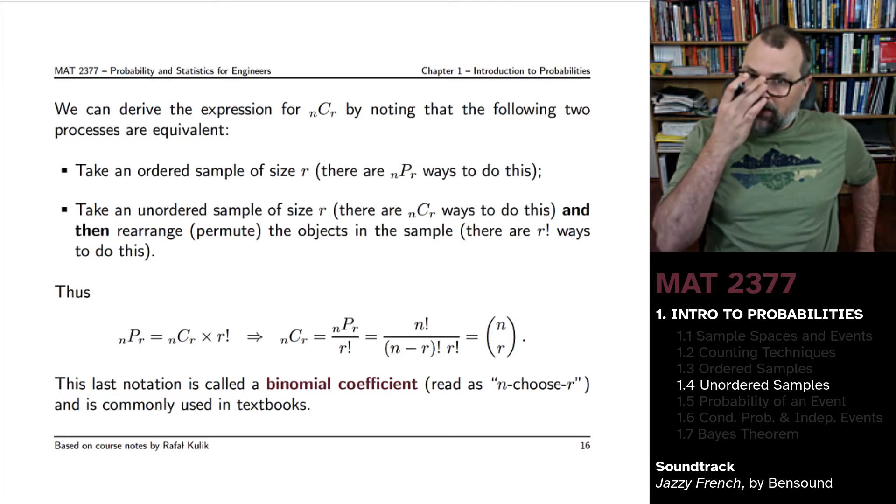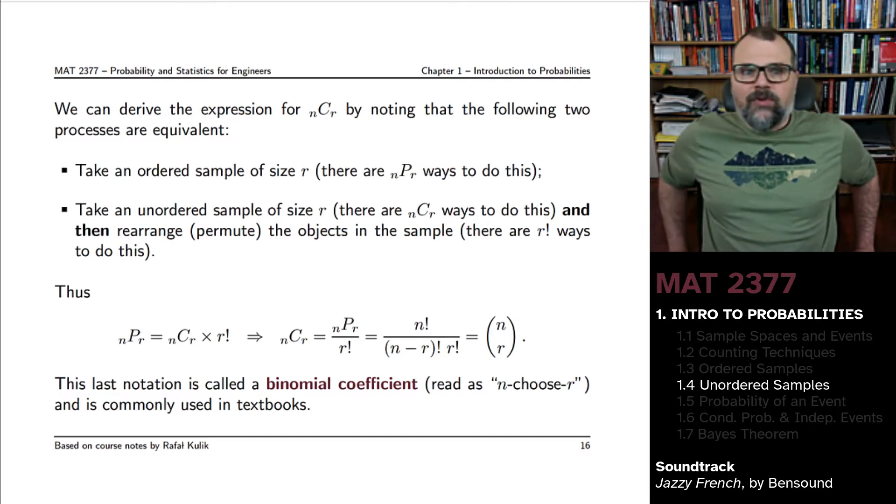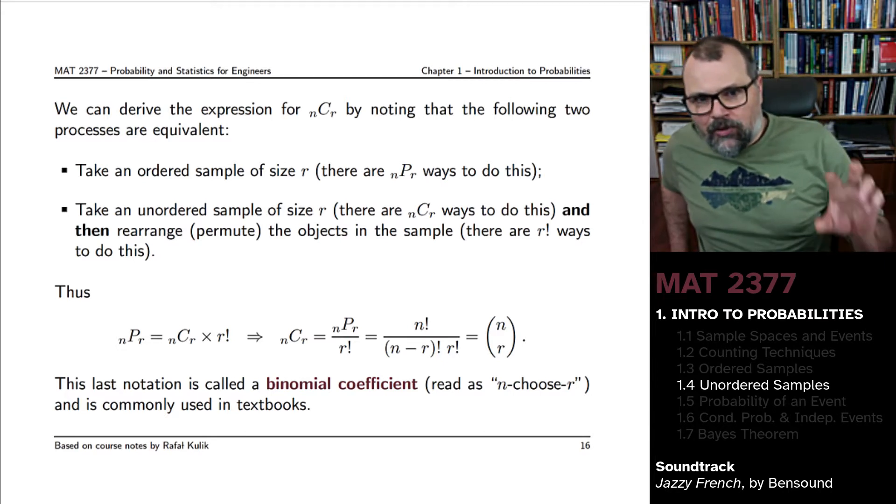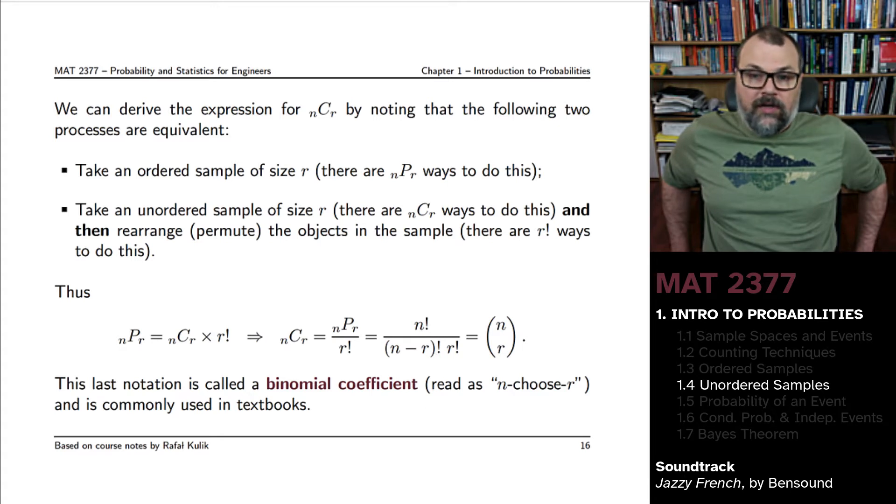You can derive it by noticing that there's two processes here which give you the same result. You're going to start by taking an ordered sample of size r. And there's nPr ways to do this.